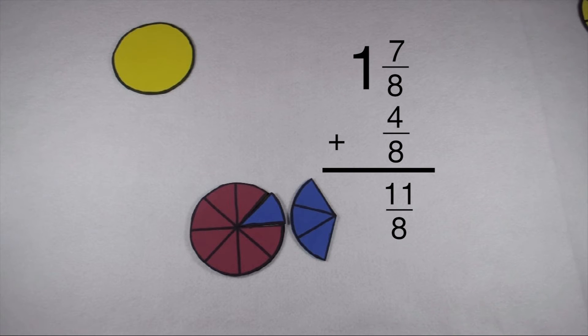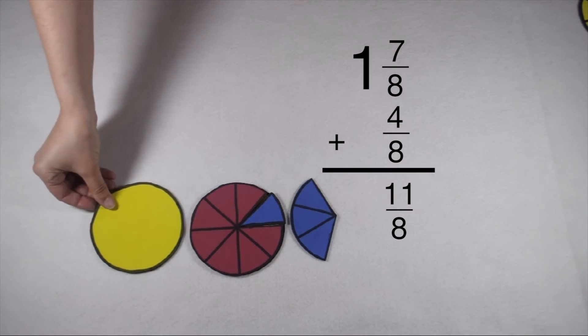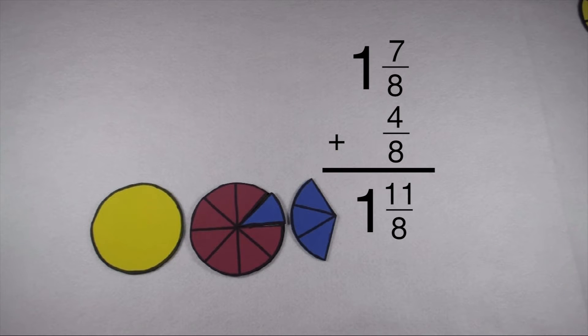Then, on my whole number, I can add 1 to nothing to give me a total of 1 and 11 eighths.